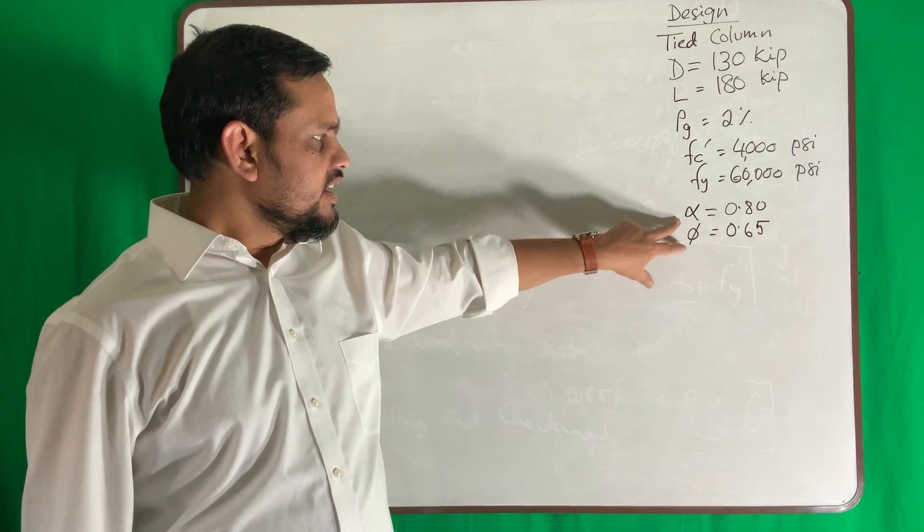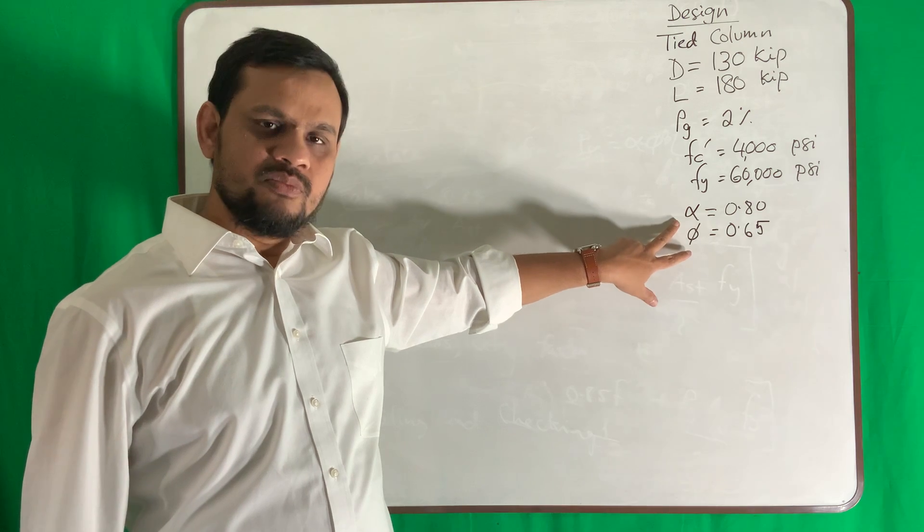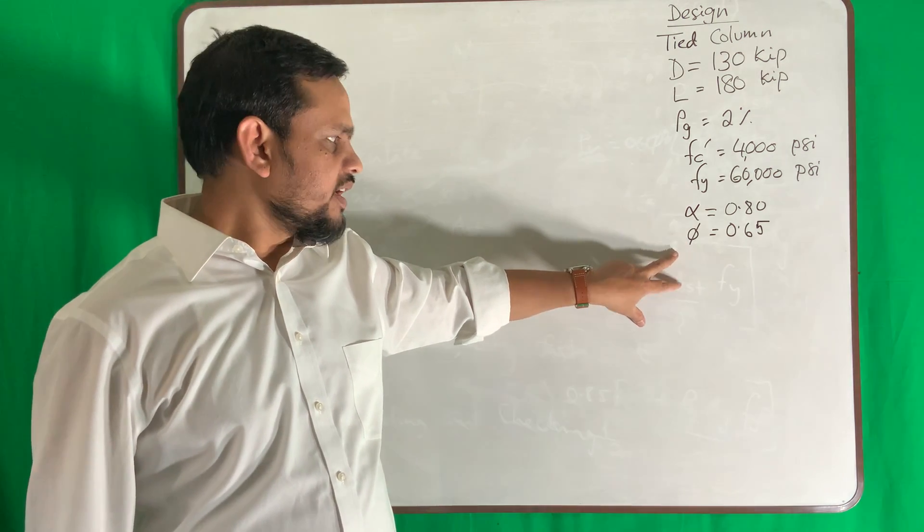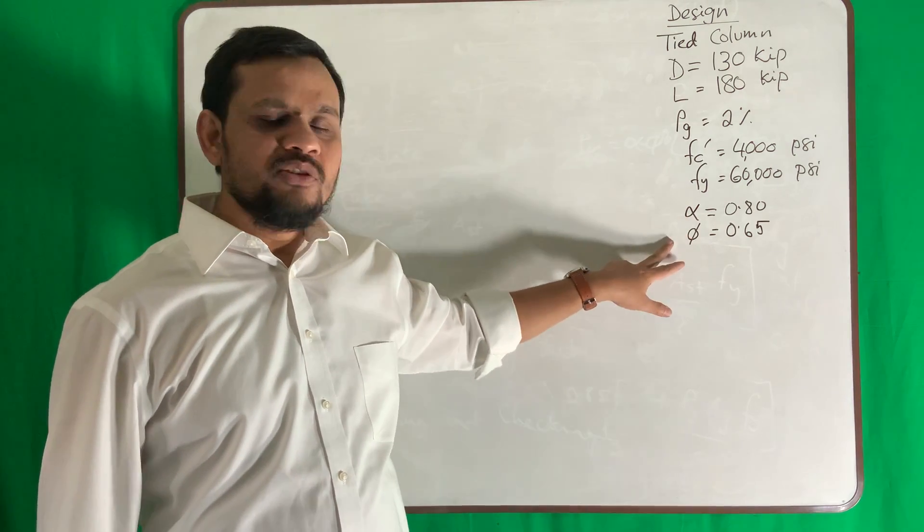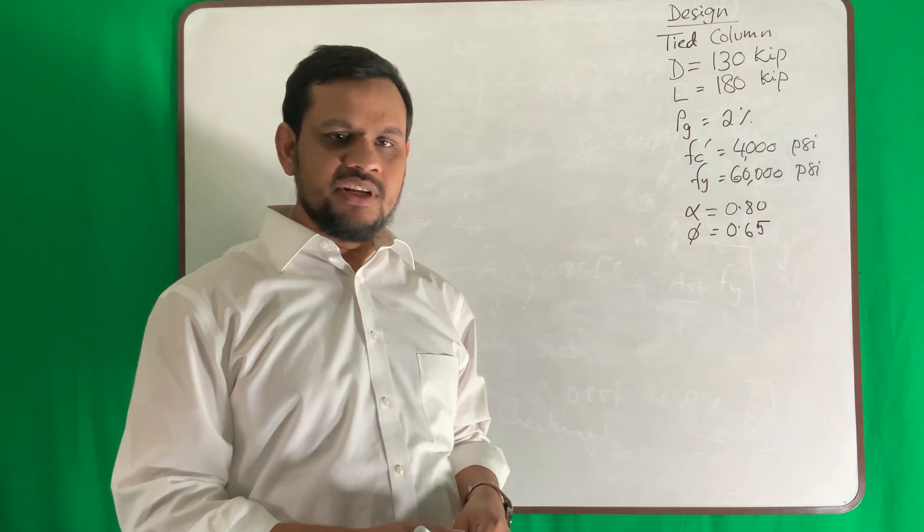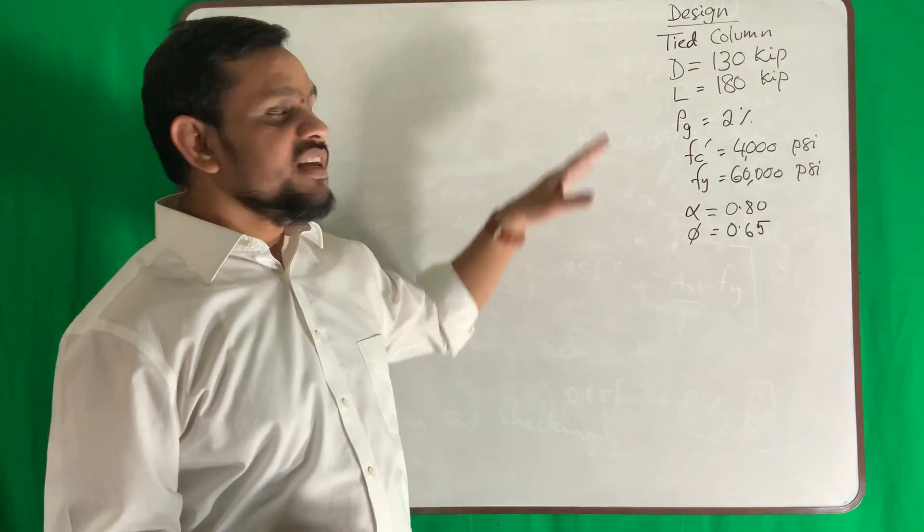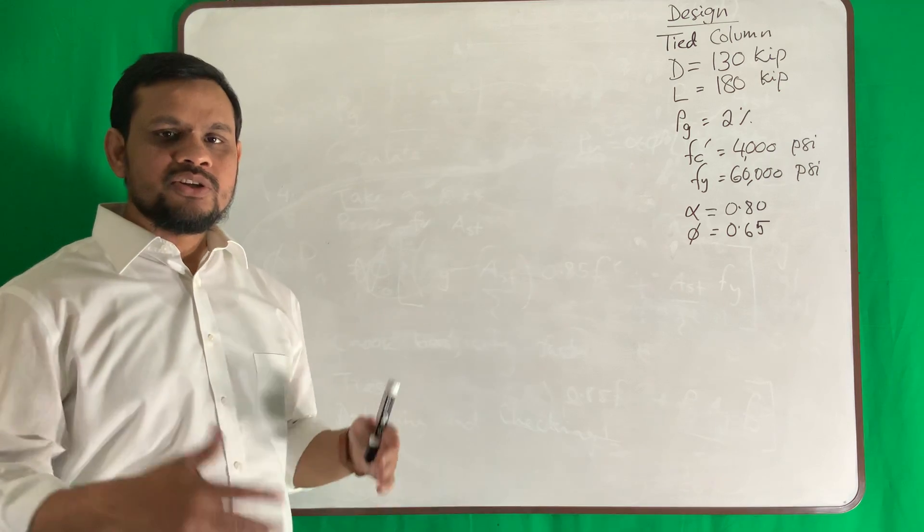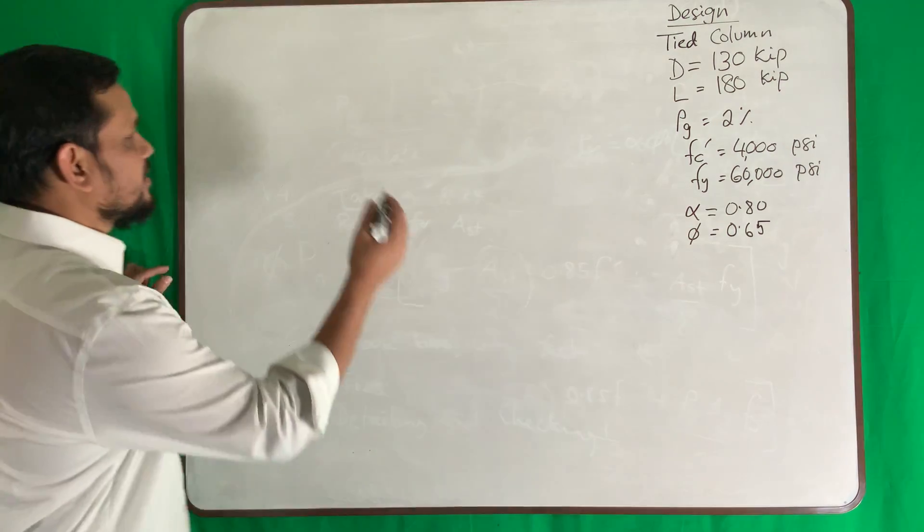Eccentricity factor assume 0.8, strength reduction factor 0.65. Again these two values may not be given; if not given, see your book what is the updated value. It is a uniaxially loaded short column.